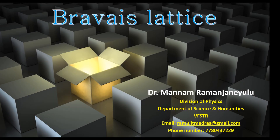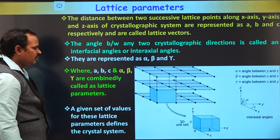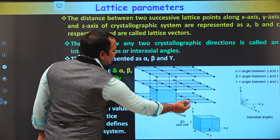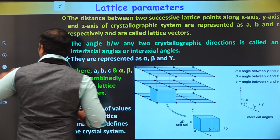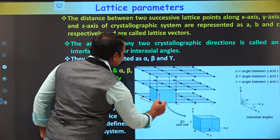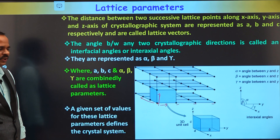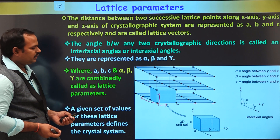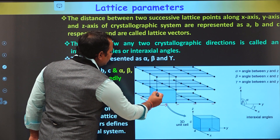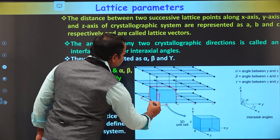Hello everyone, welcome back. In this lecture I will be discussing lattice parameters of a unit cell and also various Bravais lattices in two dimensions and three dimensions. Atoms are arranged regularly and periodically in three dimensions. The unit cell is the smallest volume — if you repeat it throughout the crystal, we get the total crystal. So this is the smallest volume of this lattice, called the unit cell.